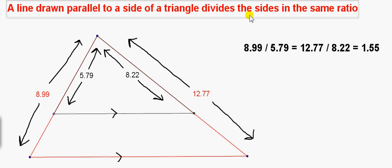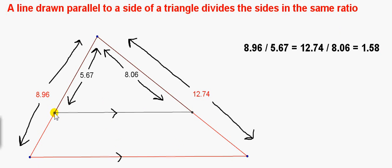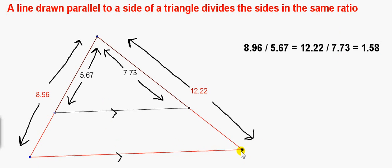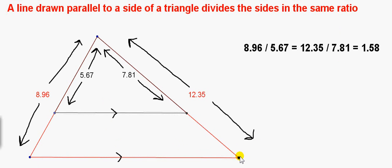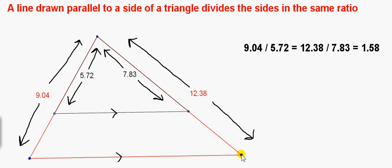A line drawn parallel to a side of a triangle divides the sides in the same ratio. This red triangle has a line in it that is parallel to one of its sides — the arrows indicate the parallel lines. The distance from one point divided by the distance to the next point is the same on both sides of the triangle. For example, 12.74 divided by 8.06 gives the same answer on either side, and that ratio is constant even as the triangle is moved around. When we do the divisions, we always get 1.58 for either side.